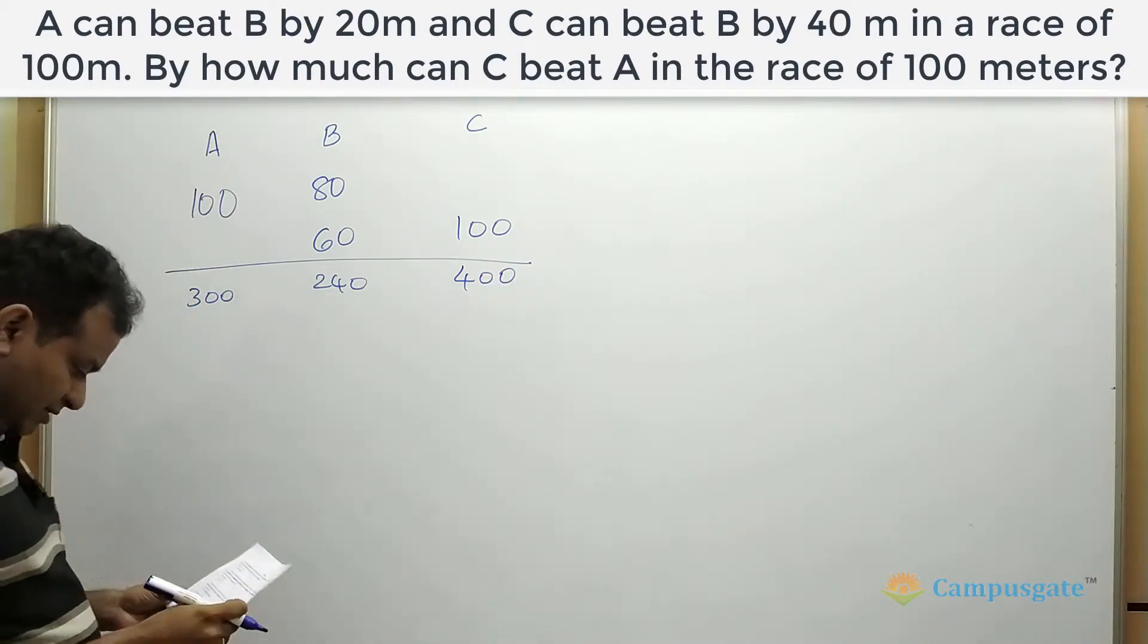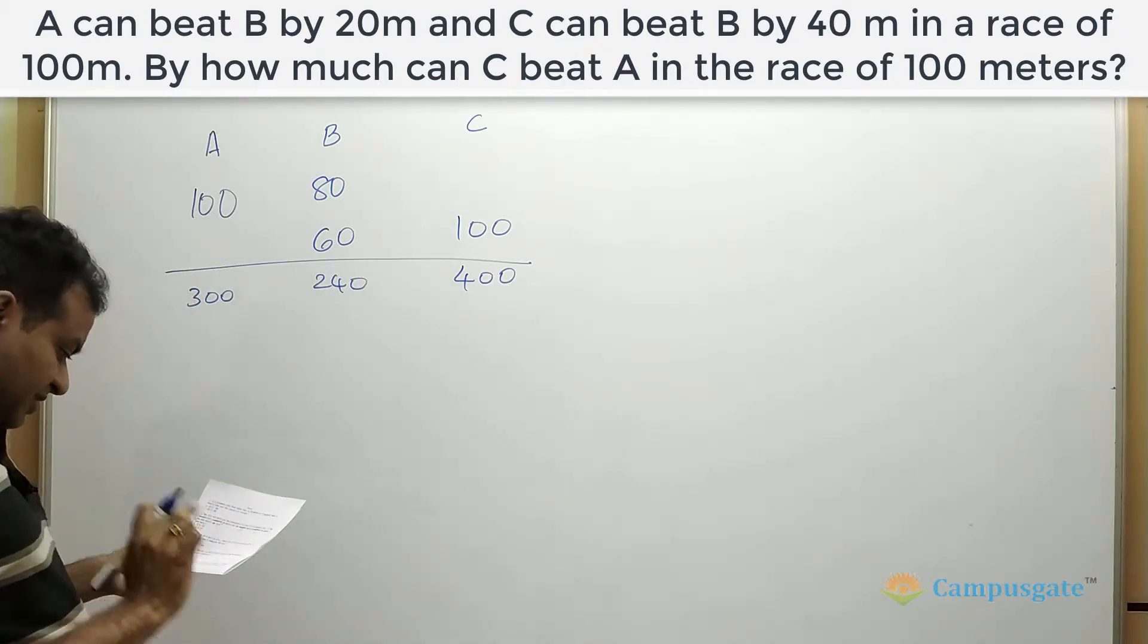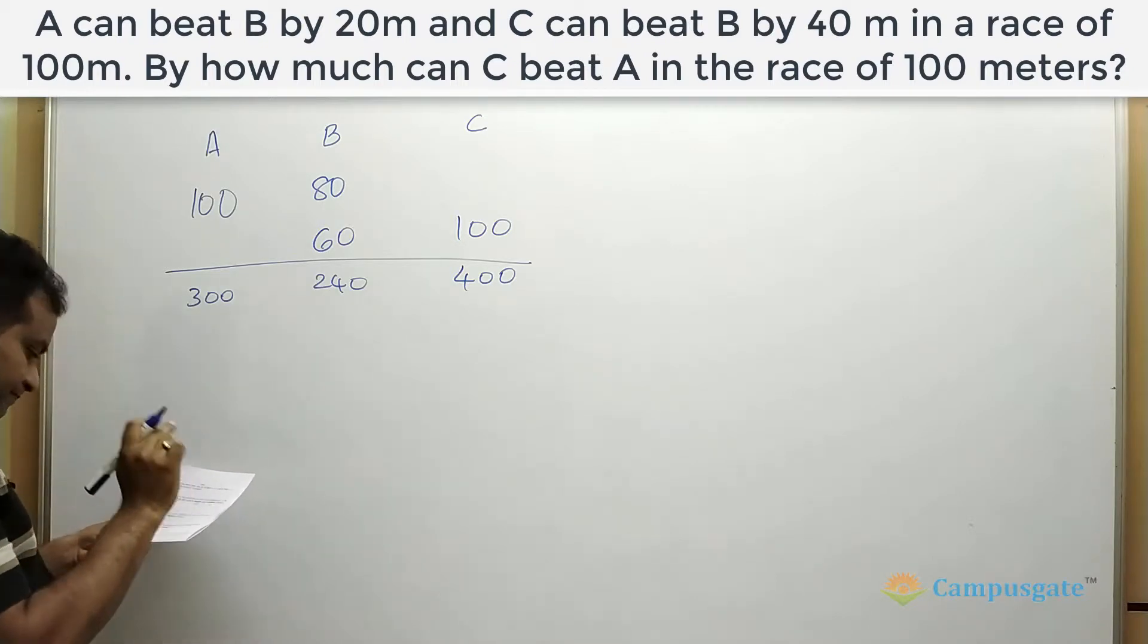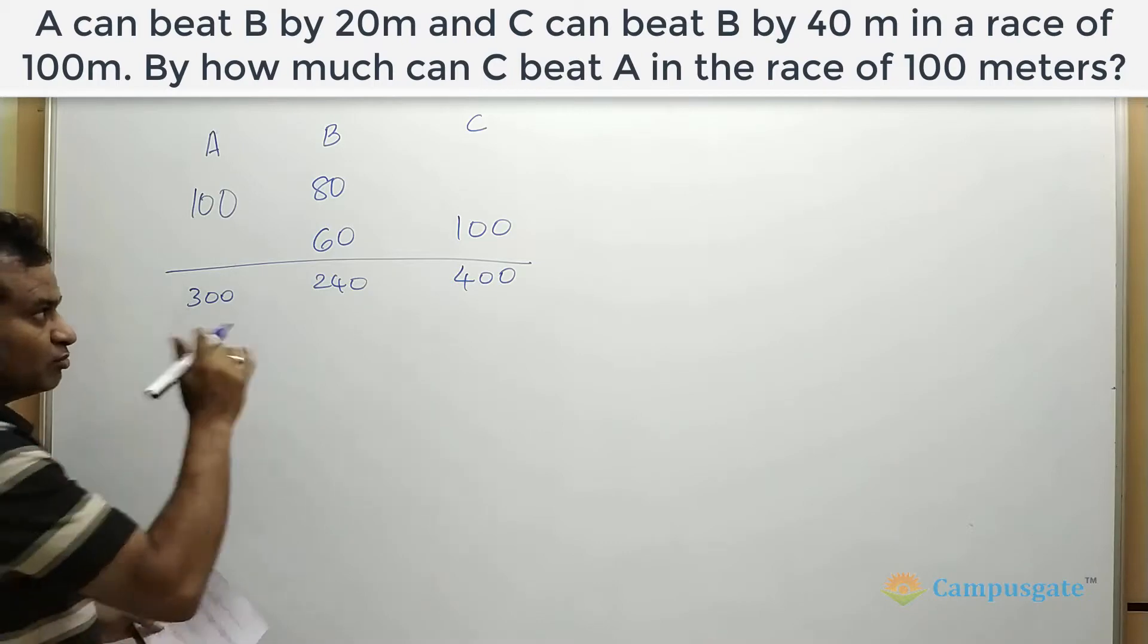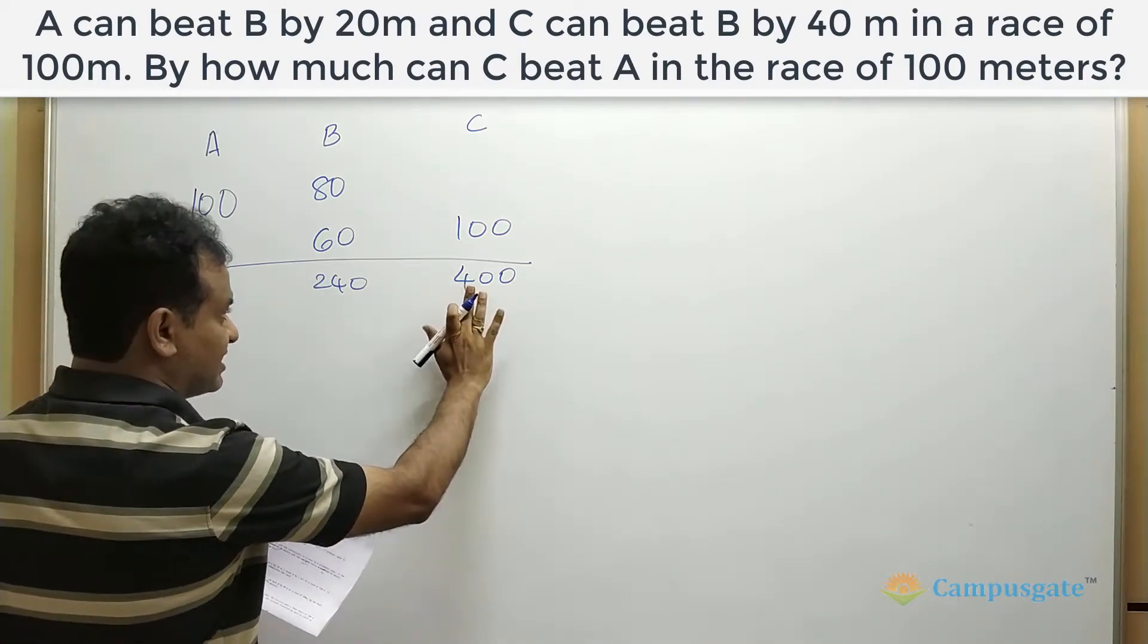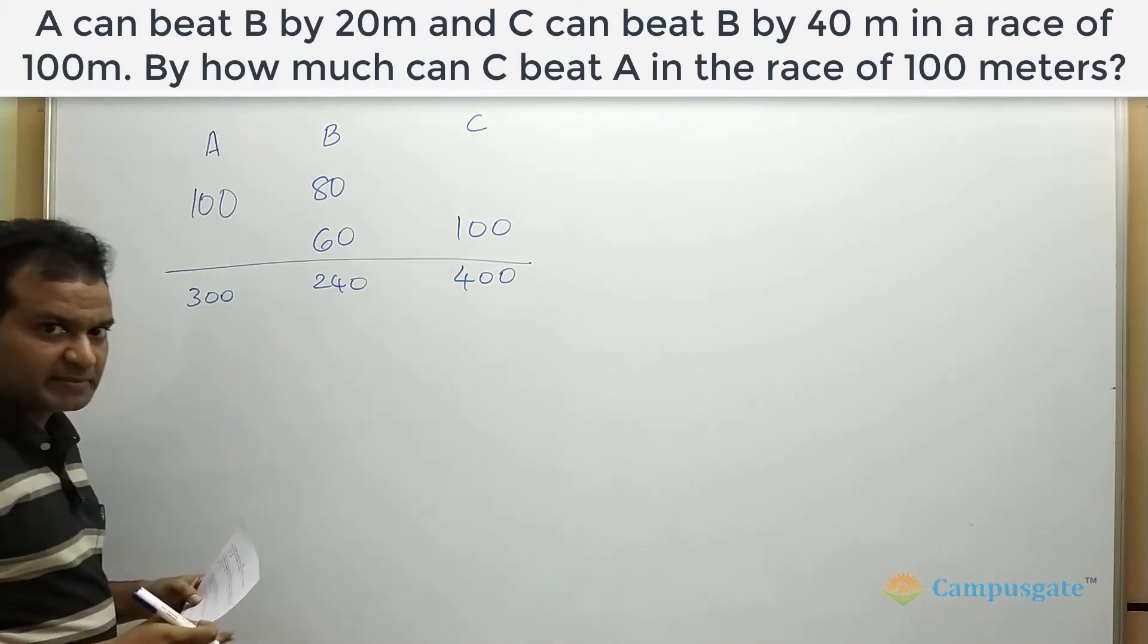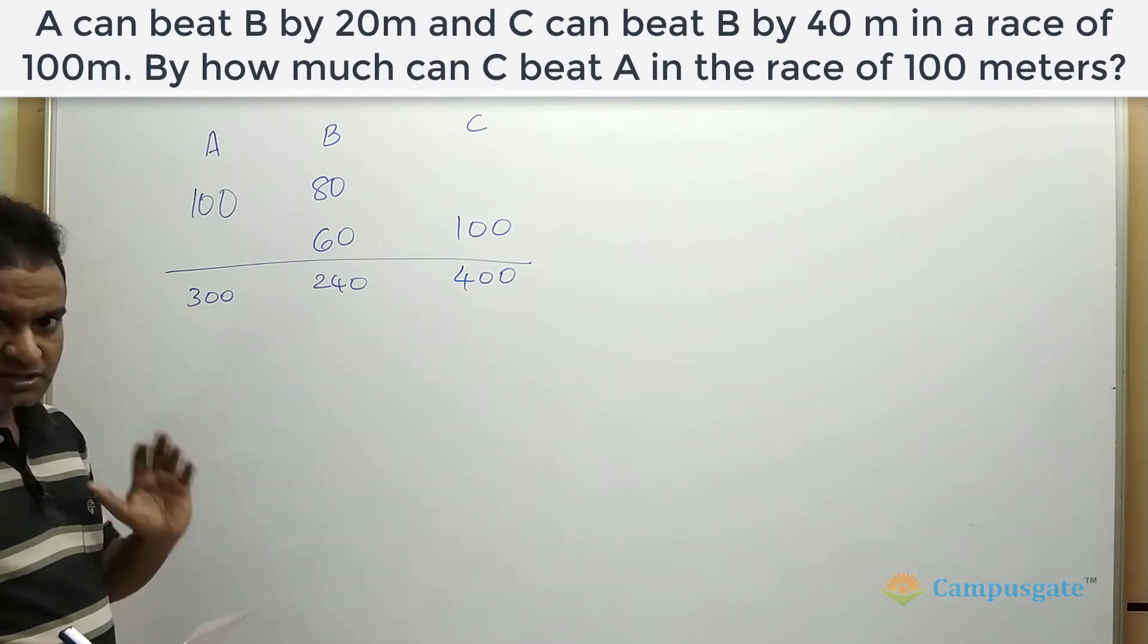So this is what we got. Now, we need to calculate by how much can C beat A in a race of 100 meters. Now, it is clear that if C completes 400 meters, A completes how much? 300 meters.